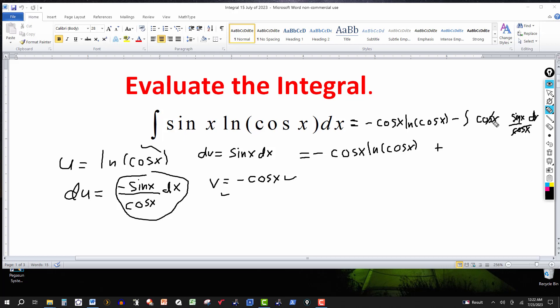So the integral of minus sine of x dx would be cosine of x, because the derivative of cosine gives minus sine. Then I've got the constant of integration. So the final answer is minus cosine of x times ln of cosine of x plus cosine of x plus C.